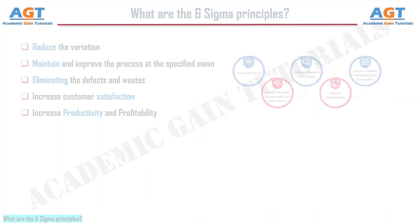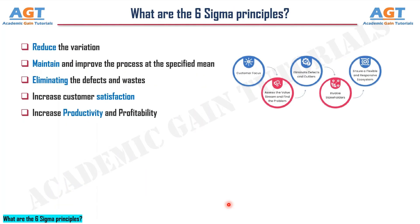What are the Six Sigma principles? Reduce the variation. Maintain and improve the process at the specified mean. Eliminate defects and wastes. Increase customer satisfaction. Increase productivity and profitability.